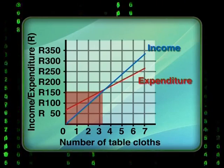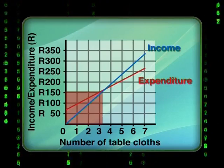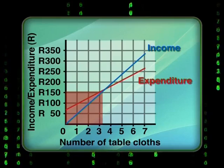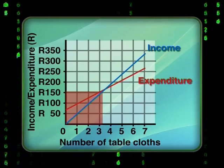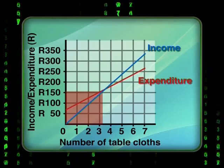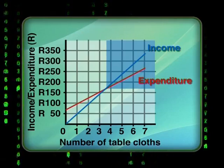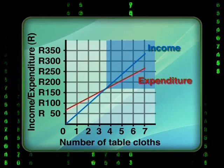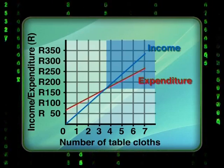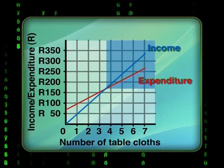Let's look at each of these sections using the graph you've drawn for the tablecloths. In this highlighted area, the red expenditure line is above the blue income line. So even though Madi has sold three tablecloths, her expenditure is more than her income. This area on the graph represents a loss. What happens after she sells four or more tablecloths? For four or more tablecloths, the blue income line is above the red expenditure line. This means she is bringing in more money than it costs her to make the tablecloths. She must be making a profit when she sells more than four tablecloths.